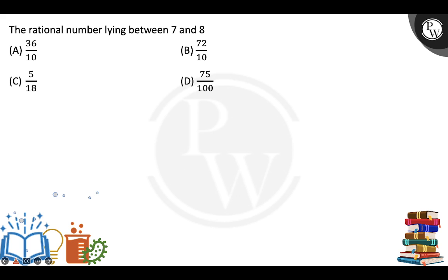So, option number D is clearly showing that 75 by 100 form is 0.75, and 72 by 10 form is 7.2. 36 by 10 form is 3.6.